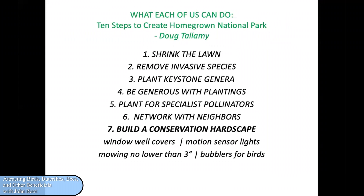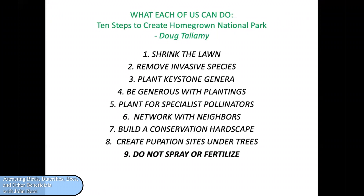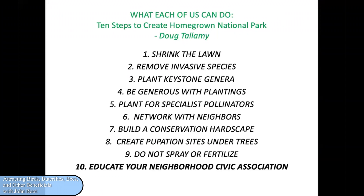Providing bubblers for birds will attract them — moving water is irresistible for birds. Create pupation sites under trees. The majority of caterpillars fall from the trees in the fall and if there are no leaves or other native vegetation to hide under, they are easy picking for any predators. Do not spray or fertilize with synthetic fertilizer, and educate your neighborhood civic association to make sure they are not part of the problem. Sometimes civic associations don't want things to look too natural — but they need to be natural, of course.